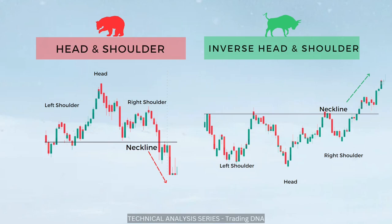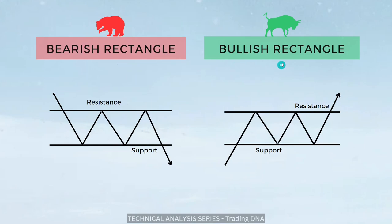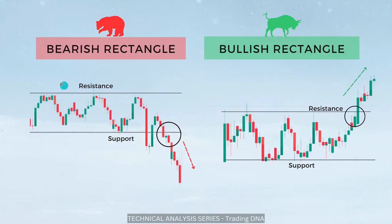Moving on to the next patterns: bearish rectangle and bullish rectangle. Here the price of the stock moves between a channel, and depending on which side the stock price breaks, you can make an entry. At the resistance and support levels, once the price breaks the support you can go for short selling and the price can go towards the downside. In a bullish rectangle, the price moves between support and resistance before breaking the resistance zone; once this resistance is broken you can go for a long. This is how you trade bearish rectangle and bullish rectangle.